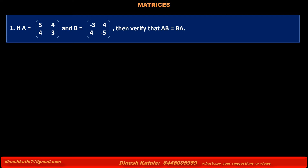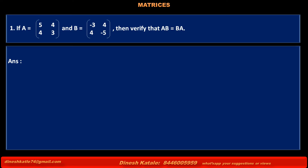Problem 1. If matrix A is equal to [[5, 4], [4, 3]] and matrix B is equal to [[-3, 4], [4, -5]], then verify that AB is equal to BA.